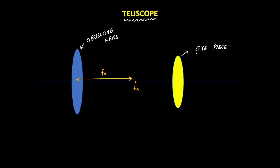Similarly, for the eyepiece, the focal length from the optical center is small fe. The focus is Fe, and if we extend it to the other side, it lies roughly here — that is the focus of the eyepiece on that particular side.